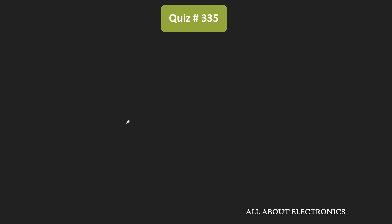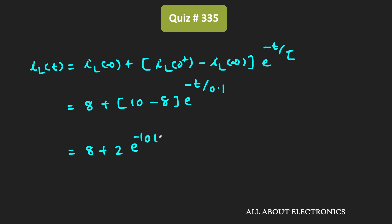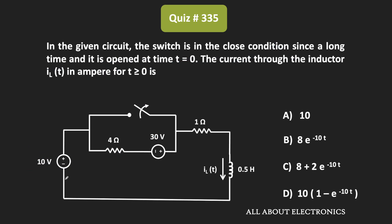From this we can say that the inductor current IL(t) = IL(∞) + [IL(0+) − IL(∞)] × e^(−t/τ). Now, IL(∞) is equal to 8 amperes and IL(0+) is equal to 10 amperes. That means this expression can be written as 8 + (10 − 8) × e^(−t/0.1), that is equal to 8 + 2 × e^(−10t). So this is the expression of the inductor current, and from this we can say that for the given question, option C is the correct answer.